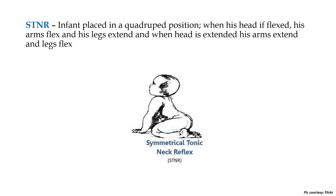In the symmetrical tonic neck reflex, the infant is placed in a quadruped position. When his head is flexed, his arms also flex and his legs extend. While when the head is extended, his arms extend and the legs flex. As you can see in the photograph, the head of the infant has been extended and the arms also extend while the legs flex.